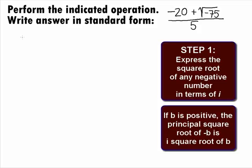So, we can rewrite the square root of negative 75 as i square root of 75. This will give us negative 20 plus i square root of 75 all over 5.